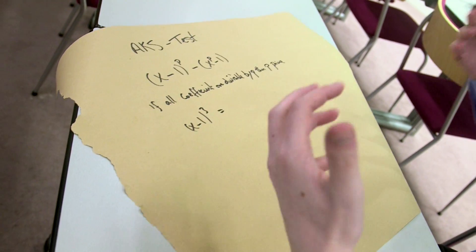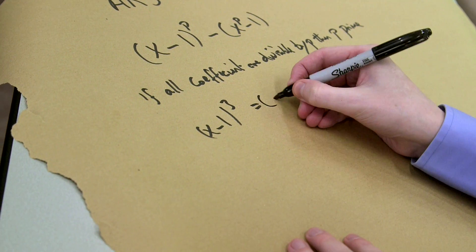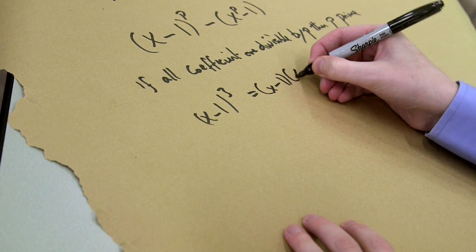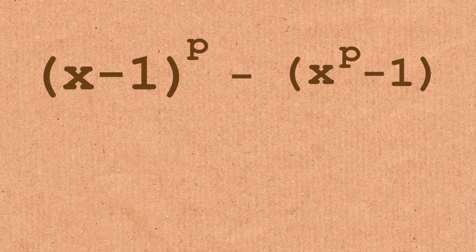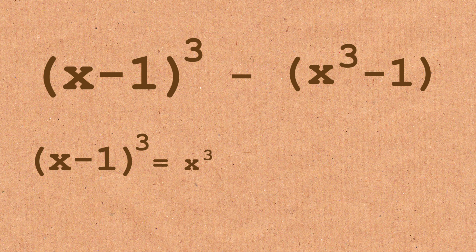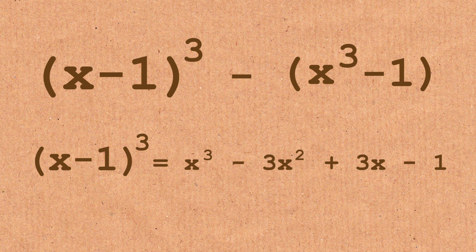We're going to take x minus 1 cubed. So to make it explicit, x minus 1 by x minus 1 by x minus 1. Multiply this out. You get a polynomial called x cubed minus 3x squared plus 3x minus 1. That's what you get.